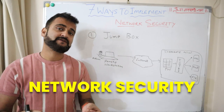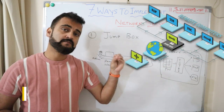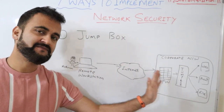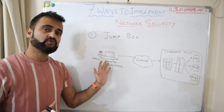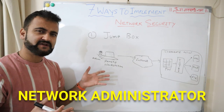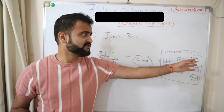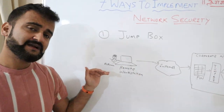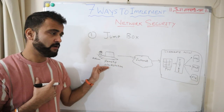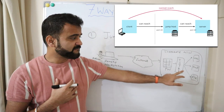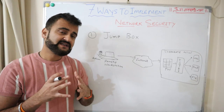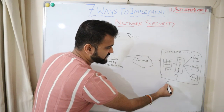The first method to implement network security is implementing a jump box server. It's a very common way to create an abstraction between your actual servers and someone accessing those servers from outside. For example, special users like administrators who want to access your web server, print server, or file server — rather than directly accessing those servers from their laptop — would first log in to the jump box server, and from there they can access all subsequent services.